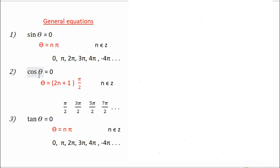Likewise, cos θ = 0. We know that cos is 0 at 90 degrees, but cos is also 0 at many other values. For θ = (2n+1)π/2, cos is 0. For example, if n = 0: 2×0 = 0, plus 1, times π/2 gives π/2. If n = 1: 2×1+1 = 3, giving 3π/2. Likewise you get 5π/2, 7π/2, and so on. So cos(π/2) = 0, cos(3π/2) = 0, and so on.